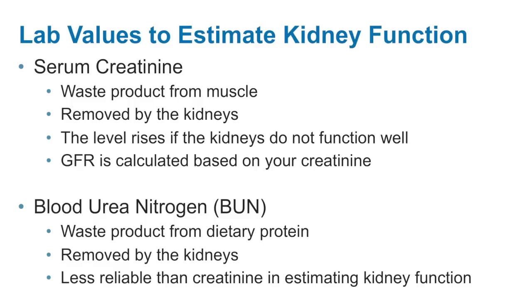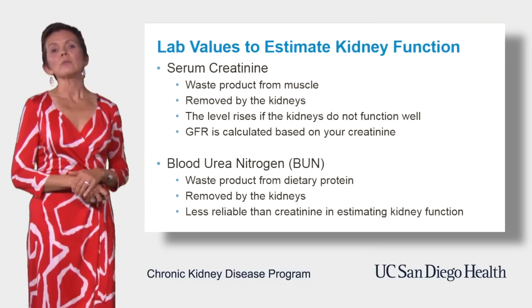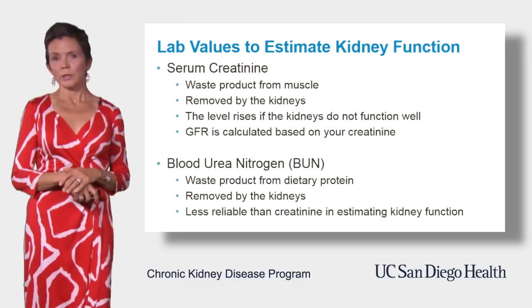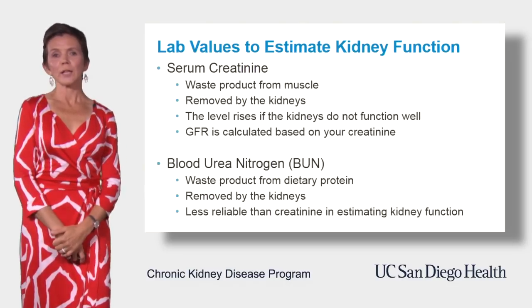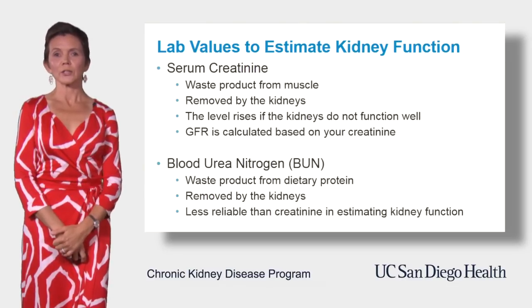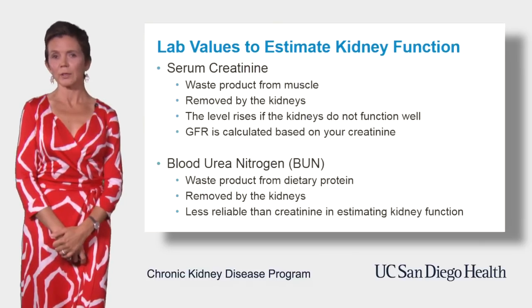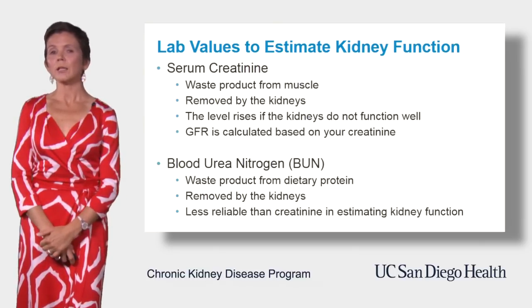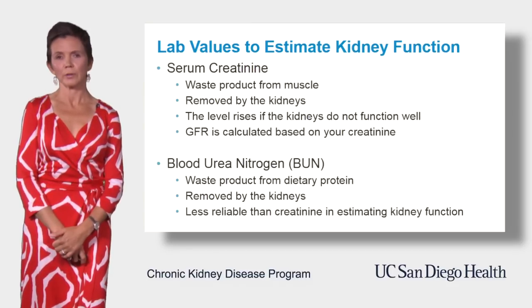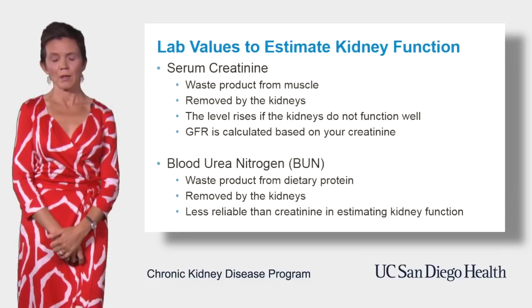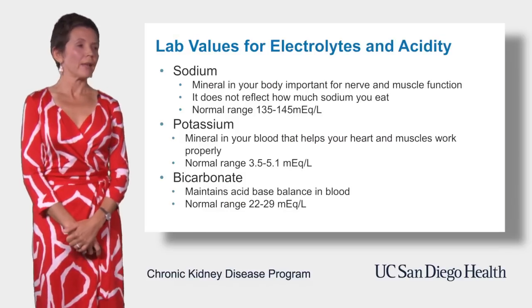Blood urea nitrogen, also known as BUN, is a waste product from dietary protein which is removed by the kidneys. BUN is also used to estimate the level of kidney function, but it is less reliable than creatinine. It can be affected by how much fluid one drinks and some other variables, so we prefer to focus more on creatinine.